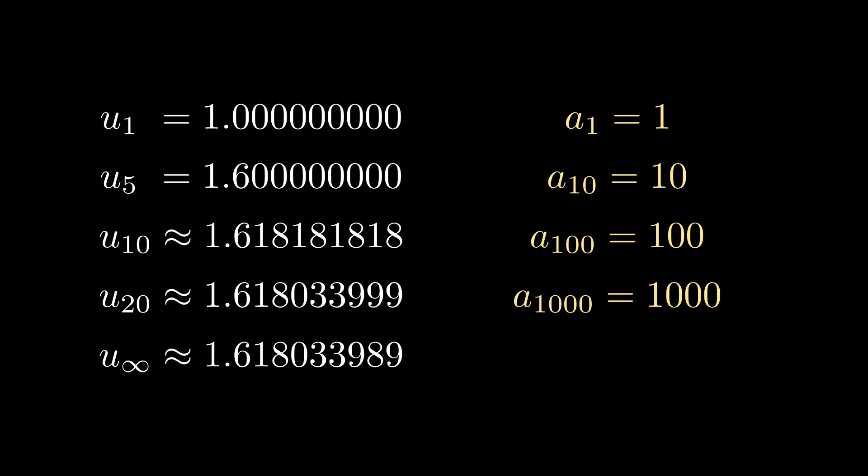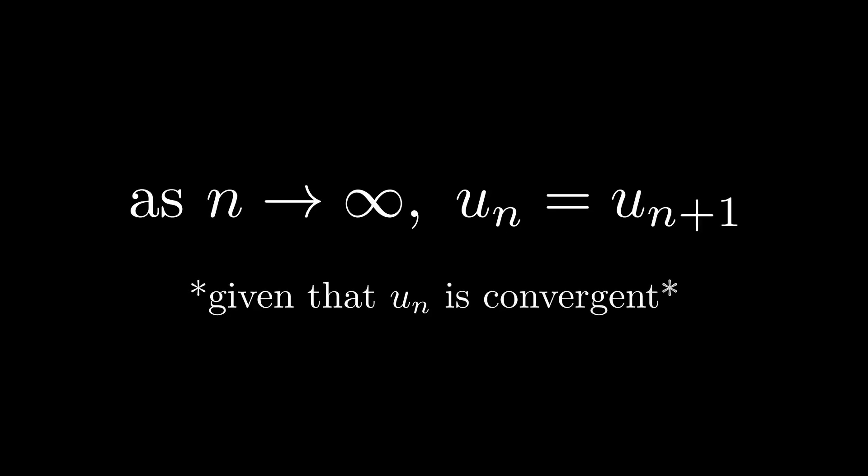When we then ask what the last term of the sequence will be, we can see why our formula breaks, and although we can deduce in this case by inspection that u∞ is infinity, there are many sequences where we cannot easily presume a solution. We can see that the claim that we made does hold for any sequence, but will only yield a useful solution with the caveat that the sequence is converging.